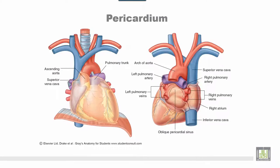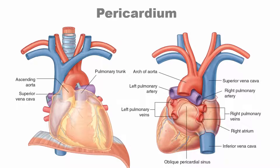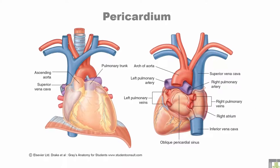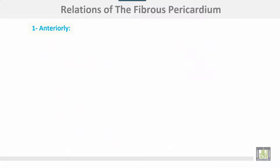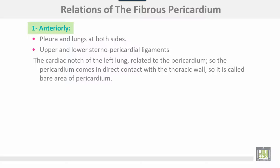The heart is covered by pericardium; after removal of the pericardium, the outer fibrous layer is visible, lined by the inner serous pericardium. Relations of the fibrous pericardium anteriorly include the pleura and lungs of both sides, and the upper and lower sternopericard­ial ligaments connecting the fibrous pericardium to the back of the body of the sternum. The cardiac notch of the left lung is related to the pericardium, bringing the pericardium into direct contact with the thoracic wall — this is called the bare area of the pericardium.